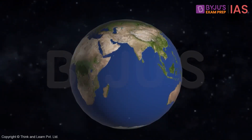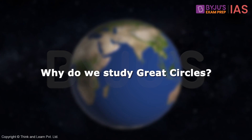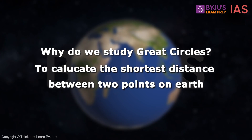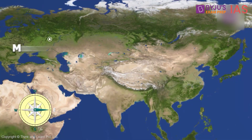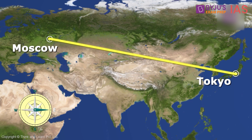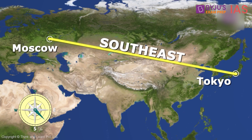Now coming to the importance of why we study great circles — the answer is to calculate the shortest distance between two points on Earth. Let's take an example. This is Moscow and this here is Tokyo. If I ask you to draw the shortest distance between the two places, how will you draw it? Something like this, isn't it? It means if I ask you in which direction you would head to reach Tokyo, your answer would be southeast, right? Well, that's not true.